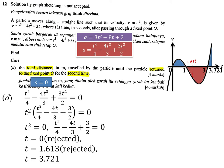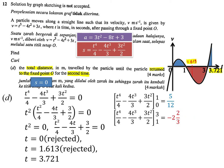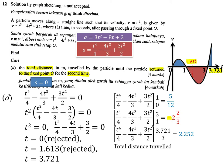The total area to find is the total distance traveled by the particle when it returns to the fixed point. Integrate in sections: from 0 to 1, substituting gives 5/12. From 1 to 3, substituting gives -2⅔ — the negative sign only represents the left-hand-side direction. Finally, integrate from 3 to 3.721, giving 2.252. The total distance is 5/12 + 2⅔ + 2.252 = 5.335 metres. The first mark is given when you correctly find the time 3.721.